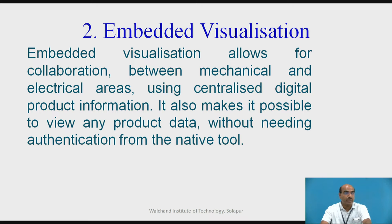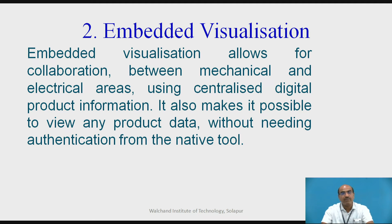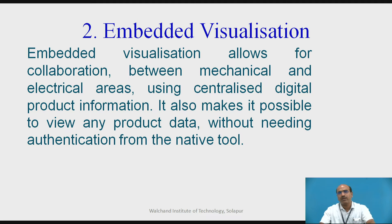The second component is embedded visualization. Embedded visualization allows for collaboration — across countries as well — between, for example, the mechanical and electrical departments, where these two departments interact on centralized digital product information. Each department may have different notions, but they can access the same centralized digital product information. It also makes it possible to view any product data without authentication from the native tools.